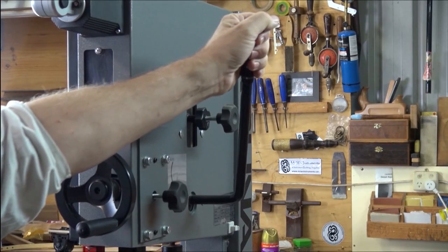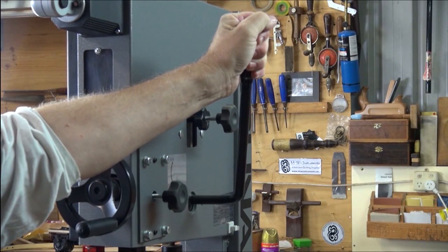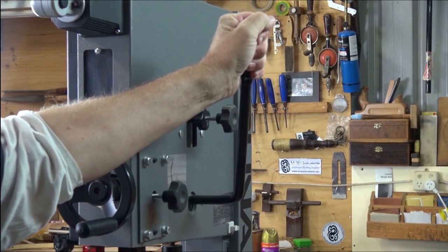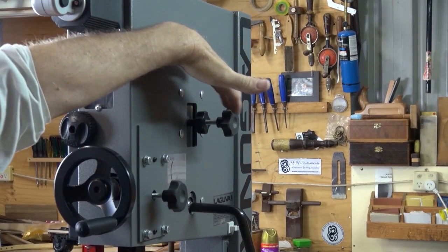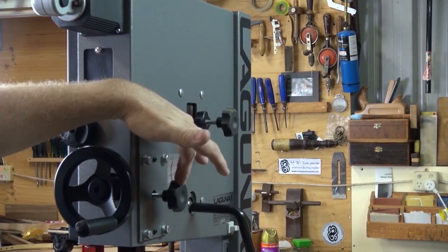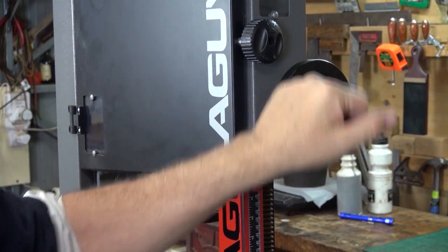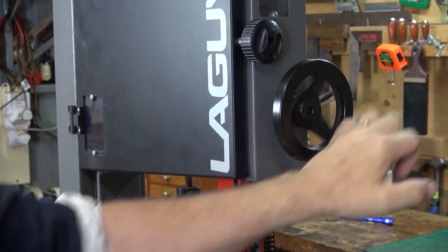If you've got an older machine, another thing that may have changed is most of the new models now are coming out with a tension release lever. All models have a tilt control facility to help centre the blade onto the wheels and prevent tracking. And finally, the locking knob for the height adjustment wheel, which is located here. This raises or lowers the guide assembly.